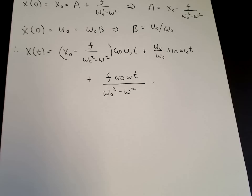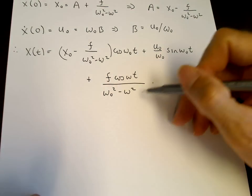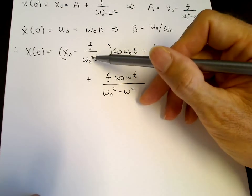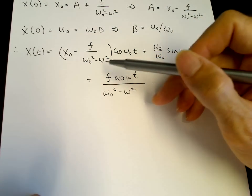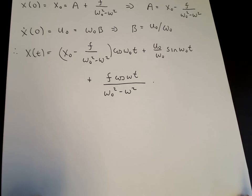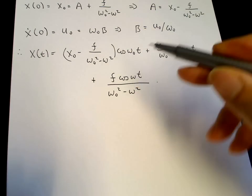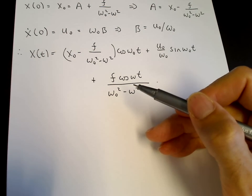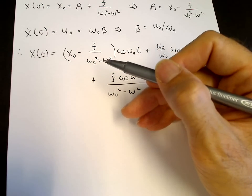This is the full solution satisfying the initial conditions and the differential equation. Now we want to know what happens at resonance — when the forcing frequency omega approaches the natural frequency omega-naught. The denominator omega-naught squared minus omega squared goes to 0, so we're going to get an infinite term. But notice that we also have an f over omega-naught squared minus omega squared in the homogeneous part. So we have two infinite terms, and we should expect them to cancel since both are proportional to f. A piece of the homogeneous solution is proportional to the forcing that appears in the inhomogeneous term.